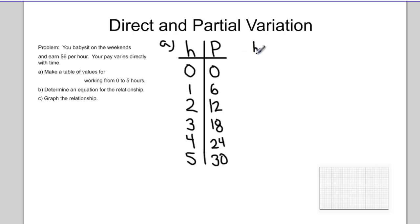Question B is asking me to create an equation for this relationship. How much money do I get paid based on how many hours I work? And the question tells me I get $6 for every hour I work. So my equation would be my pay equals $6 per hour: P equals 6H.